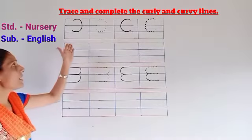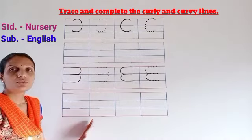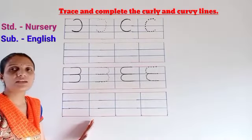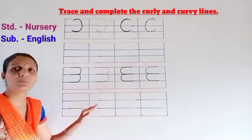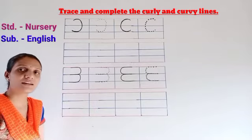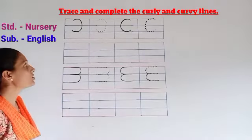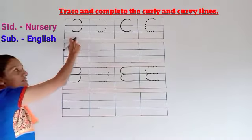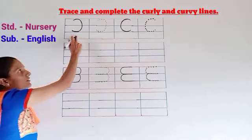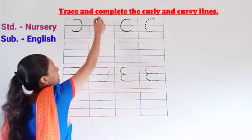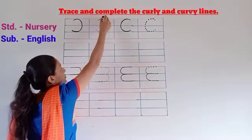Look, you have two lines here — follow them and you have to complete the Curly Lines. First, the curly line. Thumb first, trace the line — small dots and join.